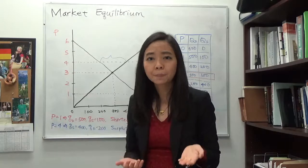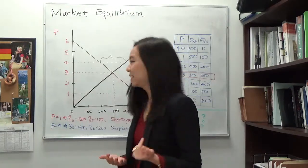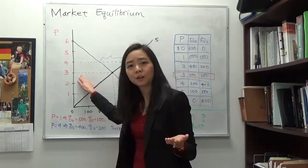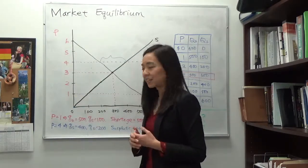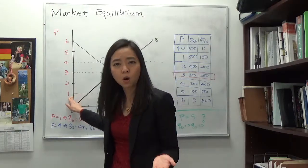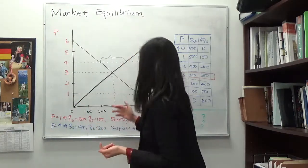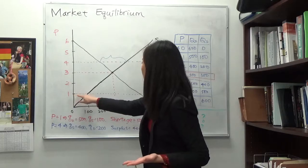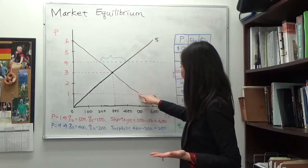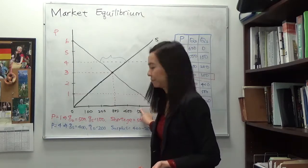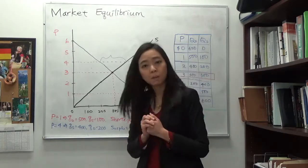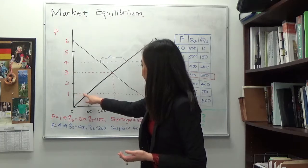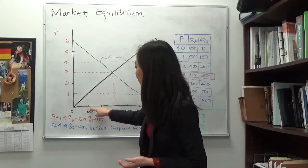What happens if our price is not equal to the equilibrium price — if your price is not three dollars? Suppose your price is one dollar instead. Given the price of one dollar, you look at your demand curve to find quantity demanded — and the quantity demanded is 500. What about quantity supplied given price is one dollar? You look at your supply curve, and the quantity supplied is 100.